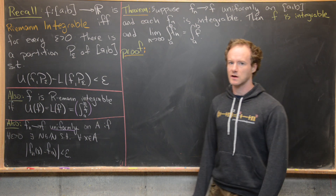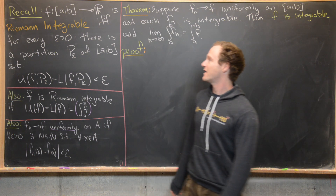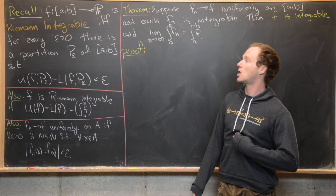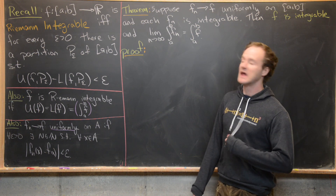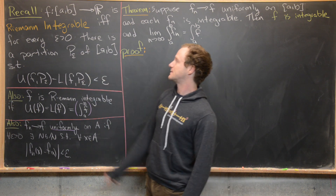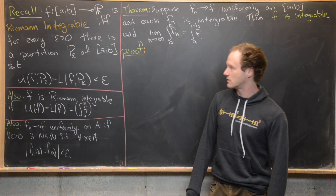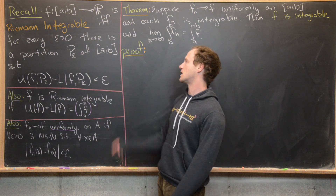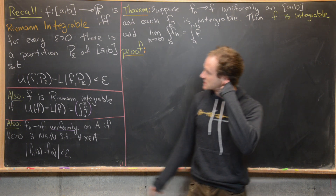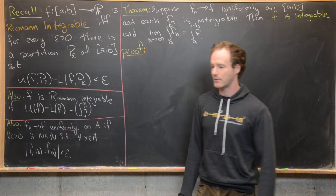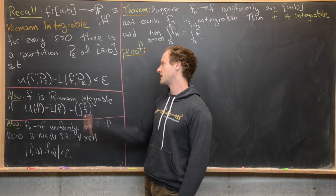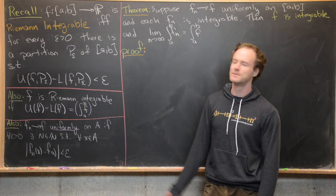Let's recall a couple of things first. f from [A,B] to ℝ is Riemann integrable if and only if for every ε > 0 there is a partition P_ε of [A,B] such that the upper sum of f on that partition minus the lower sum of f on that partition is less than ε.